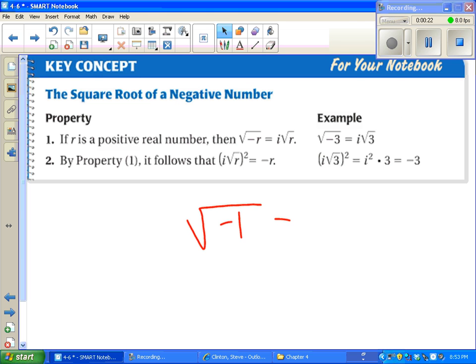The square root of negative 1 is defined as lowercase i. That means it's an imaginary number. If we end up seeing something like i squared, which we will,